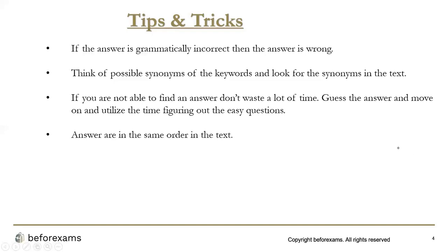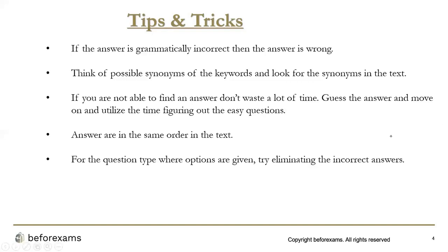An important tip: answers are in the same order in the text. In summary completion questions, if you find the answer to the first question in the third line of a paragraph, the answer to the second question will always be found after that third line — never above it. It is always recommended to look for subsequent answers after where you found the previous answer.